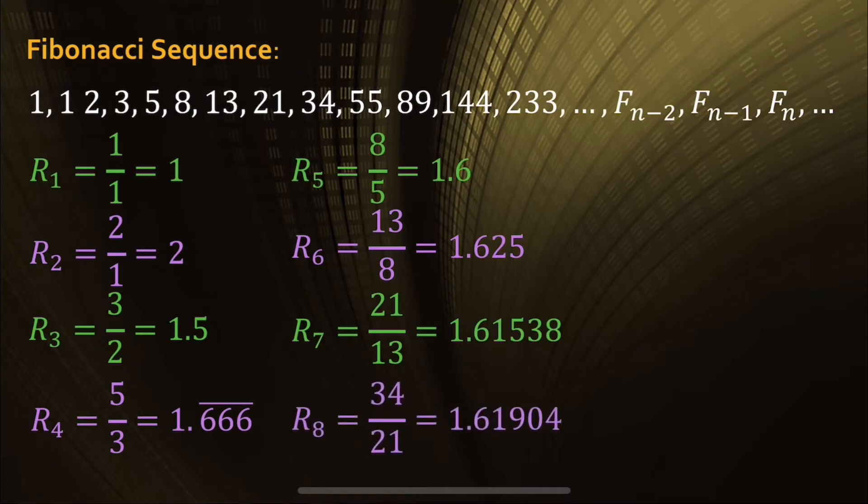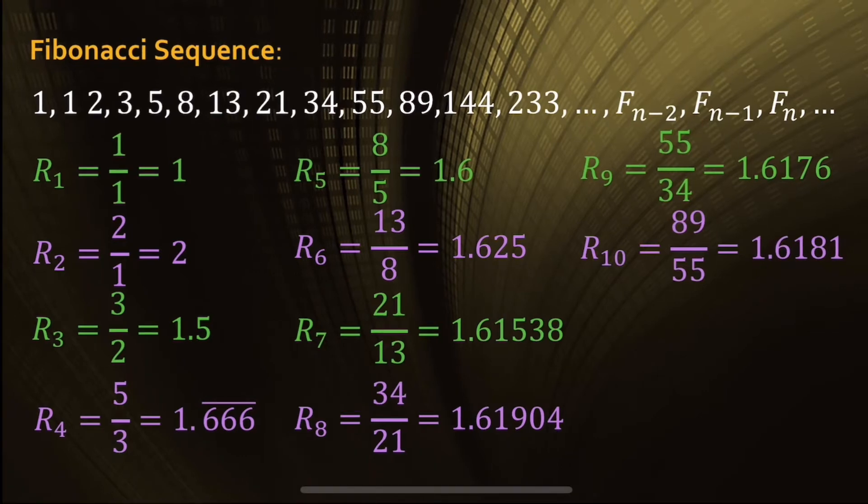And now we have 34 divided by 21, 1.61904, 55 divided by 34, 1.6176. Now we have 89 divided by 55, and that's 1.6181. So it seems like the 1.61 has stayed fairly constant. Now what if I were to keep going and dividing each number by the previous number?